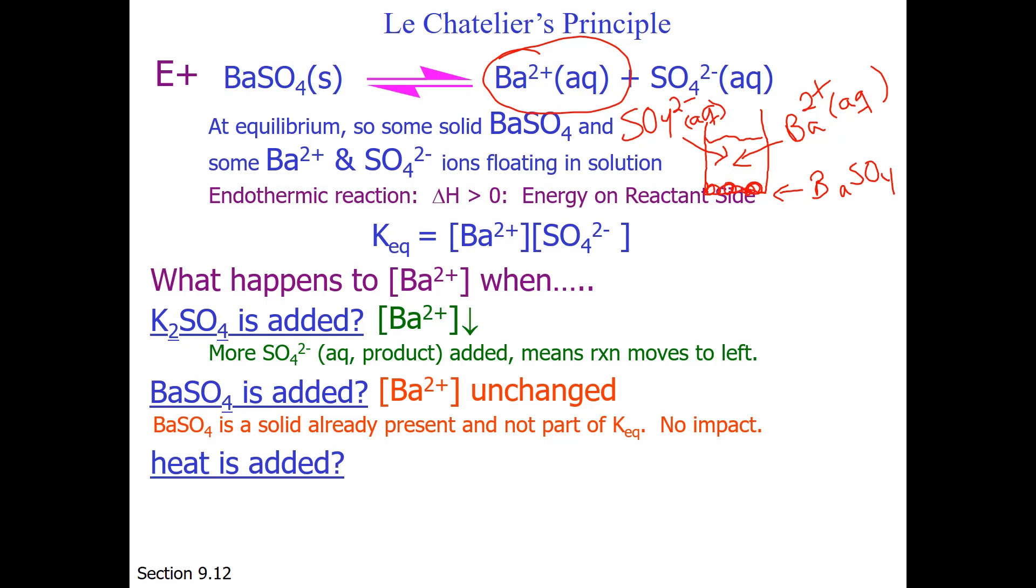Suppose we add heat. Heat is on the reactant side. So we're adding more reactant. Which way will this make the reaction shift? I hope you believe the reaction will shift to the right. And when that happens, barium ion increases, because shifting to the right increases product.